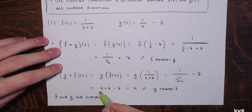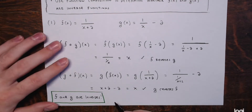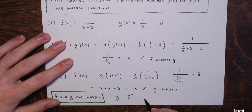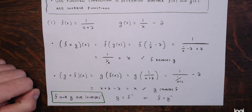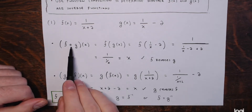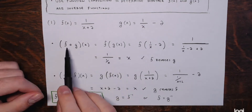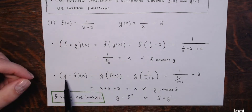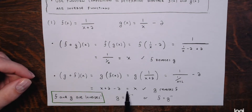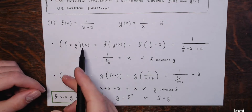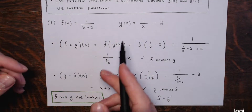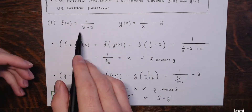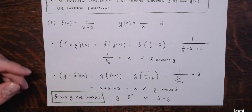We verified it with composition, so f and g are inverses — g is f-inverse, or f is g-inverse. You can test it with numbers: f(g(1)) should be 1, f(g(5)) should be 5, g(f(2)) should be 2, and so on, as long as the value is in the domain of the first function. For f∘g, x cannot be 0; for g∘f, x cannot be negative 2.